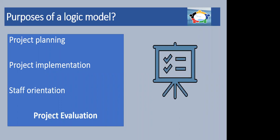It's also clear to say that logic models have a number of different purposes and they're used by different people. For example, they can be used in project planning. So a group of people who want to start a new intervention — say they want to start a youth club in a particular neighbourhood over the summer vacation — might want to use a logic model to think about the activities, the outcomes, and really to help them plan and ensure they've got the resources to do that.